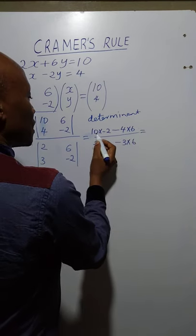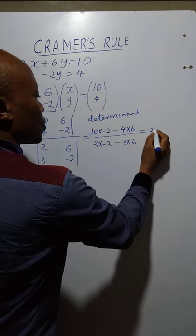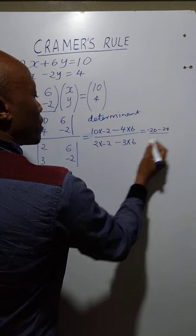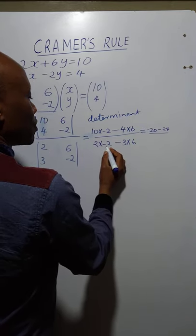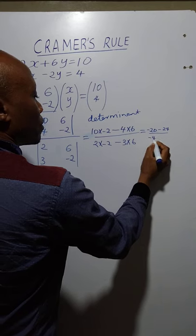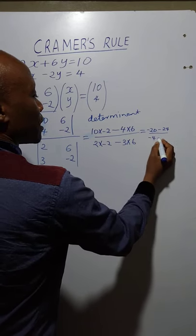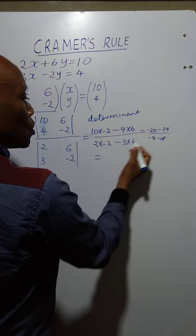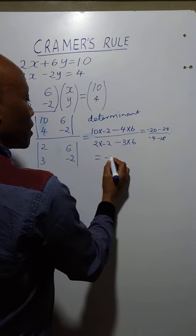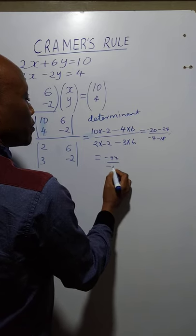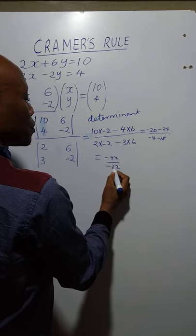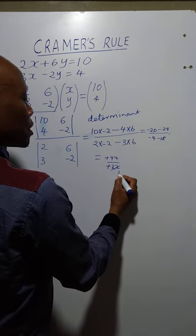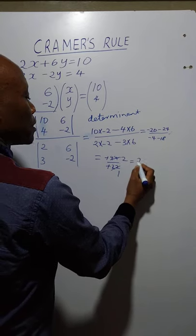That gives us: 10 times negative 2 gives us negative 20, minus 24, over 2 times negative 2 gives us negative 4, minus 18. That results to negative 44 over negative 22. The negatives cancel, 22 cancels once in the numerator and twice in the denominator, so the answer is 2.